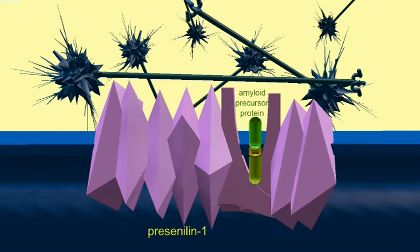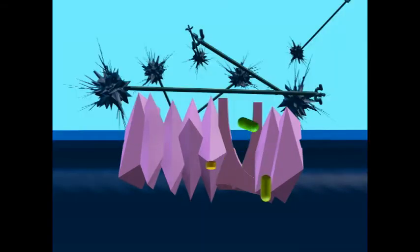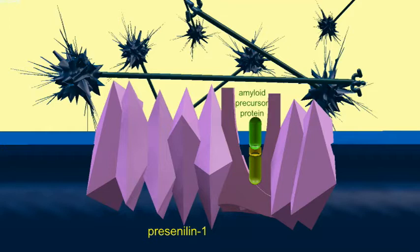Presenilin-1 is a component of the multi-protein enzyme complex of gamma secretase. In neurons, this transmembrane protein cleaves the amyloid precursor protein into three fragments, which are then further degraded.